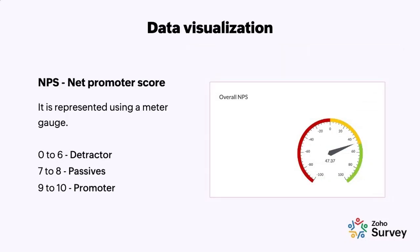The Net Promoter Score is a simple yet effective reporting metric that one should certainly include in their survey. It's typically used with a question like 'How likely are you to promote a certain service to others?' A score of zero to six is a detractor, seven to eight is passive, and nine to ten is a promoter.